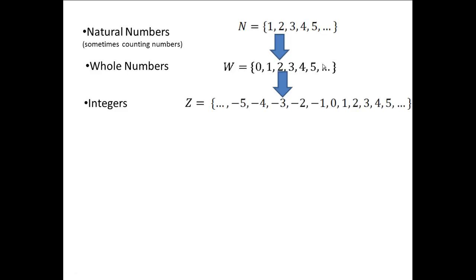The next set of numbers is called integers. The set of integers consists of all the whole numbers along with their negative counterparts. You might be wondering why we use the letter Z to represent integers — that comes from the word 'Zahlen' in German, which means numbers. Integers came into existence when you wanted to keep track of a more complex society with borrowing and debt. For example, in business you might represent a debt of $50 as negative 50.